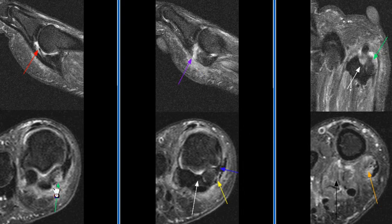A small cortical avulsion of the distal margin of the medial sesamoid is seen with a donor site, along with associated cancellous edema and periosteal stripping.